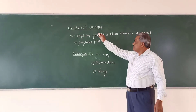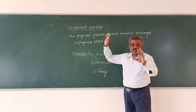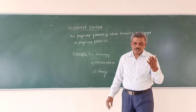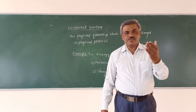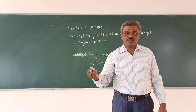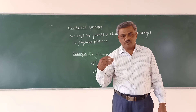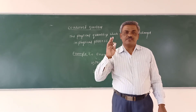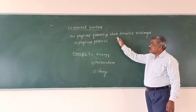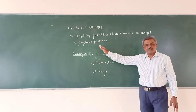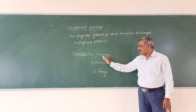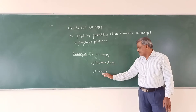Now, conserved quantities. What are conserved quantities? Any quantity which can be measured is called a physical quantity — for example, velocity, force, acceleration, energy, momentum, charge. The physical quantities which remain unchanged in a physical process are called conserved quantities — for example, energy, momentum, charge.